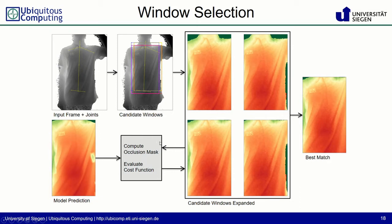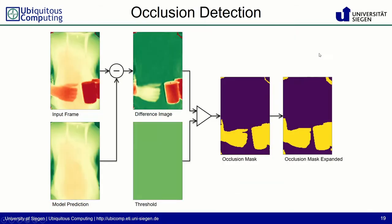Now we need to compute the occlusion mask. We have the input frame and the model prediction, and by taking the difference of both images we get similar regions — a flat surface — and regions that differ from the model prediction produce a large difference. Simply thresholding this difference image gives us an occlusion mask. We also need to expand the occlusion mask a bit to address shadow effects.